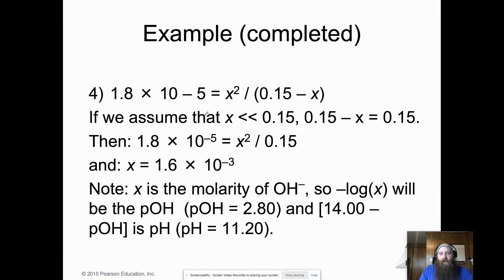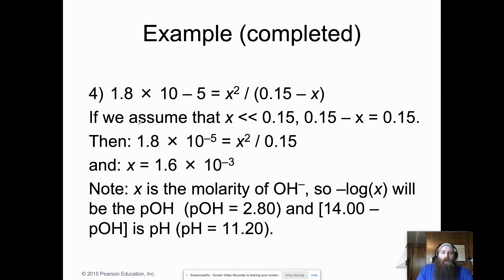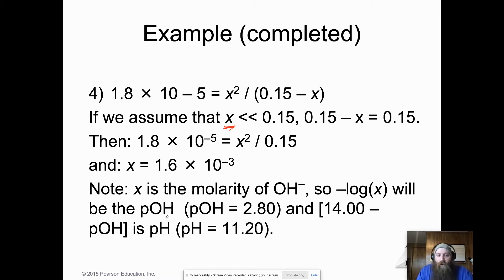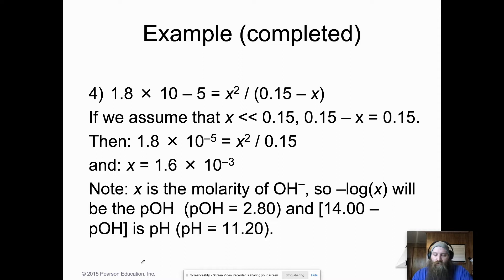Setting up the Kb expression: 1.8 × 10⁻⁵ = x² / (0.15 − x). We assume x is much smaller than 0.15, so 0.15 − x ≈ 0.15. Solving gives us the pOH as 2.8, and since pH + pOH = 14, the pH is 11.2. That extra step — using pOH to find pH — is what distinguishes Kb problems.